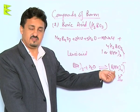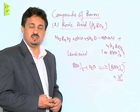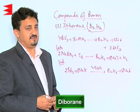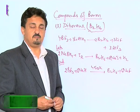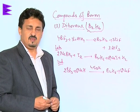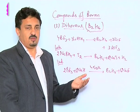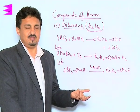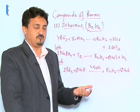The next compound of boron is diborane, which is B2H6. It's basically a dimer of boron hydride BH3, which cannot exist independently, that is why it dimerizes to form B2H6.